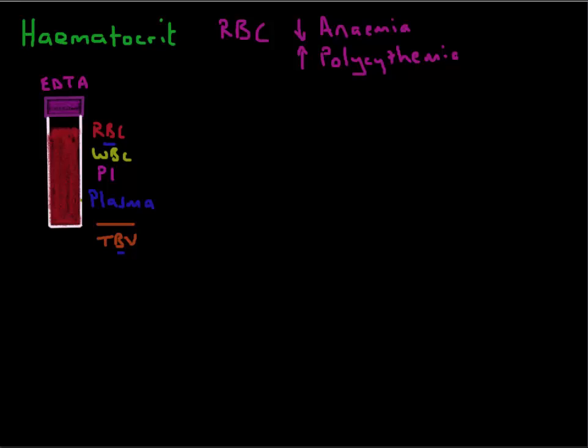Now most laboratories use automated methods to determine the hematocrit these days. There are manual methods which I explain in the video on the packed cell volume, which you can go and have a look at. But most of the machines that use automated methods do it in the following way.